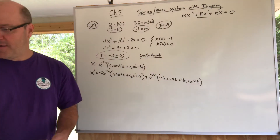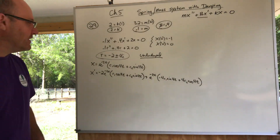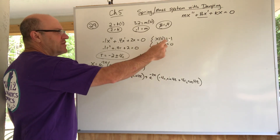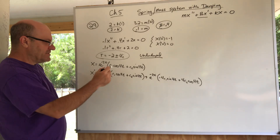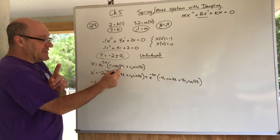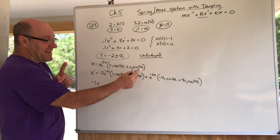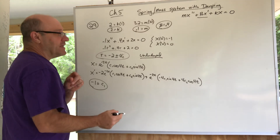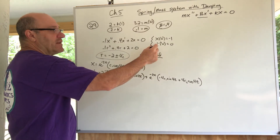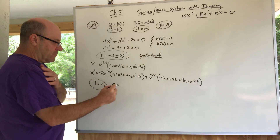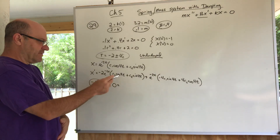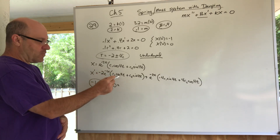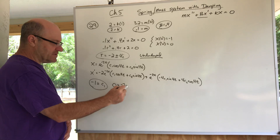To find c1, plug t = 0 into the x equation. e^0 = 1, cos(0) = 1, sin(0) = 0, so c1 = -1. That was nice. Now plugging t = 0 into the derivative equation: e^0 = 1, giving -2·c1, and since I know c1, that term simplifies.